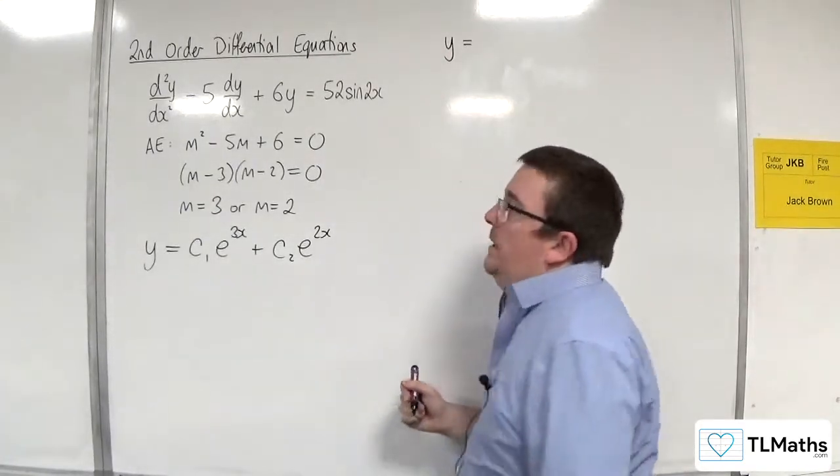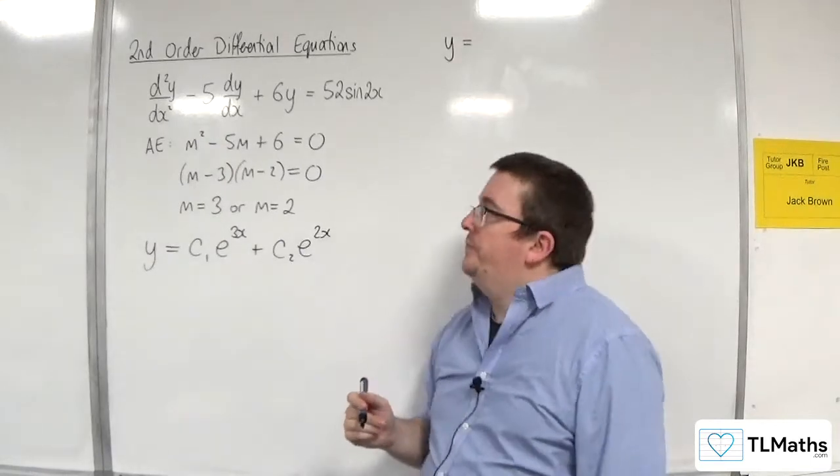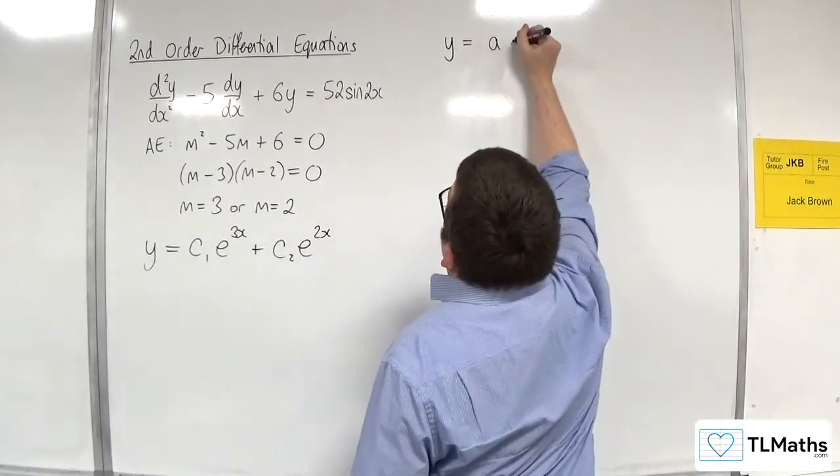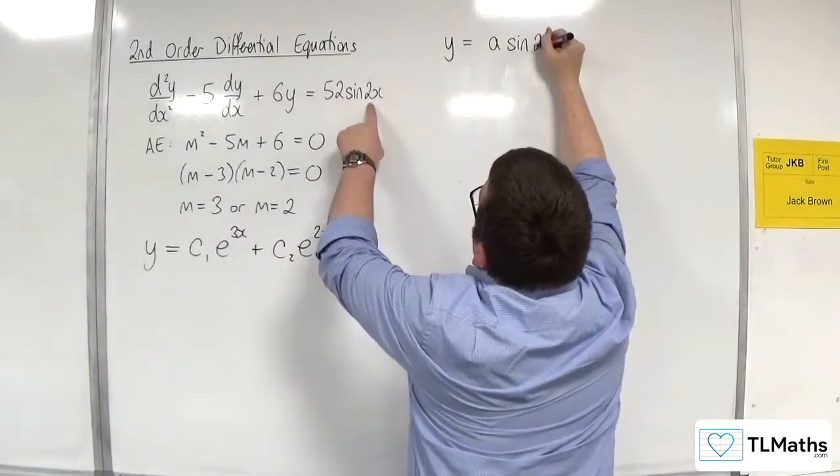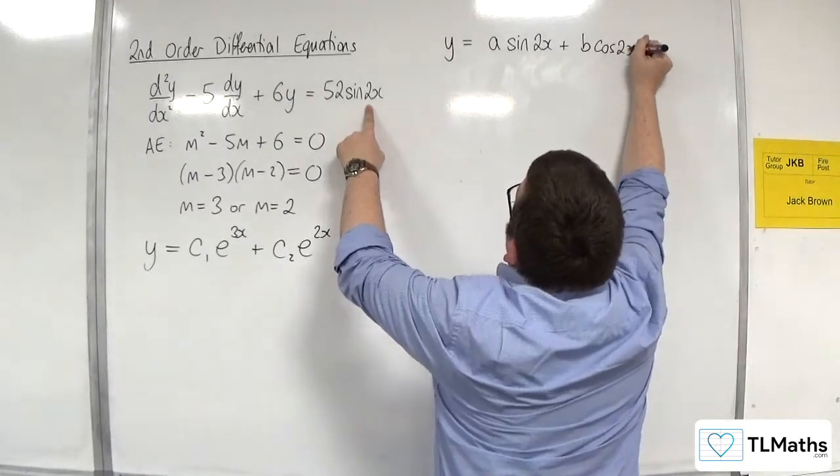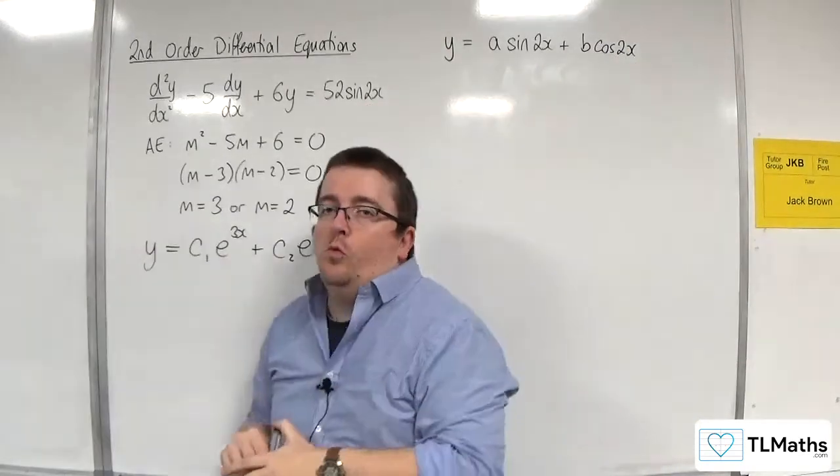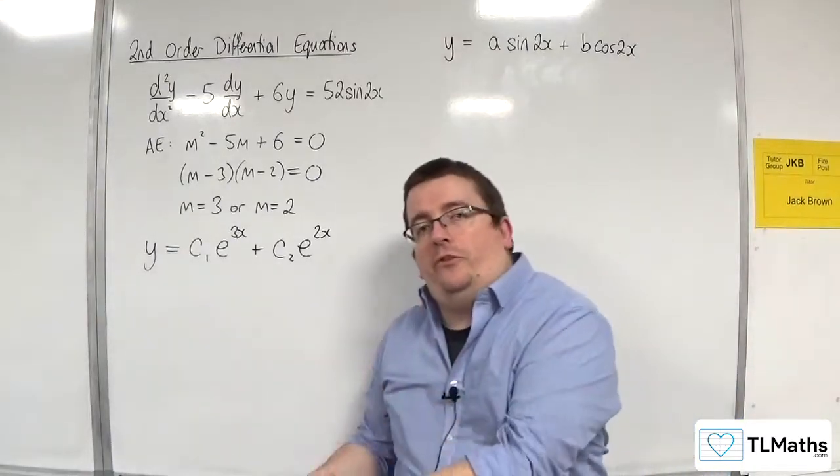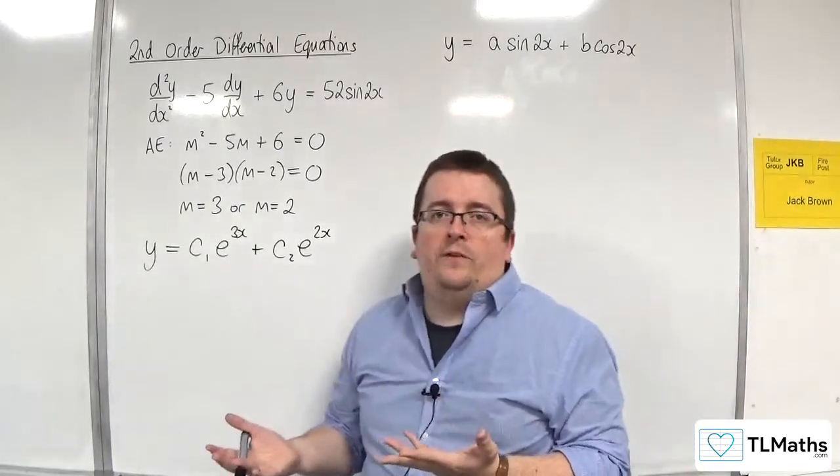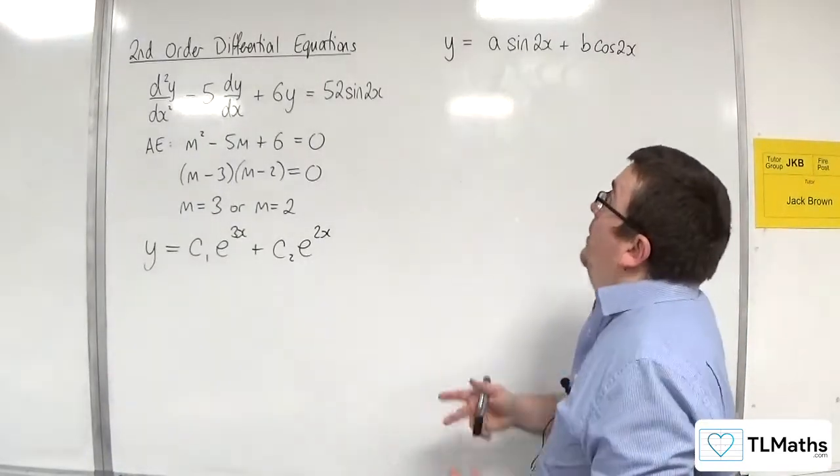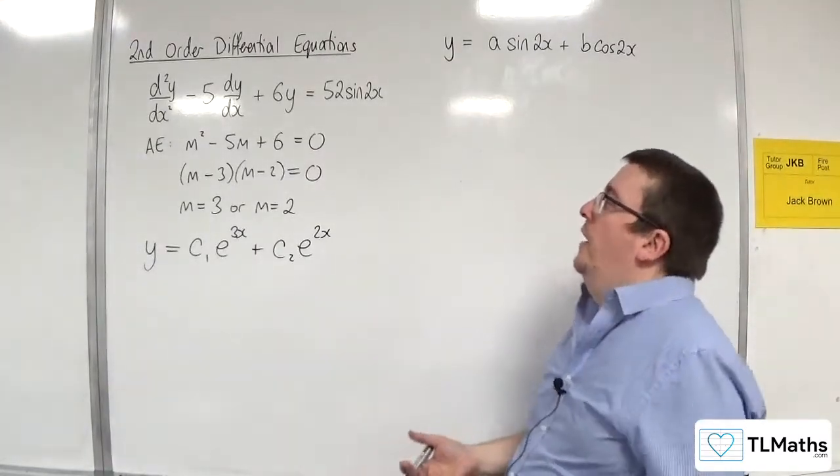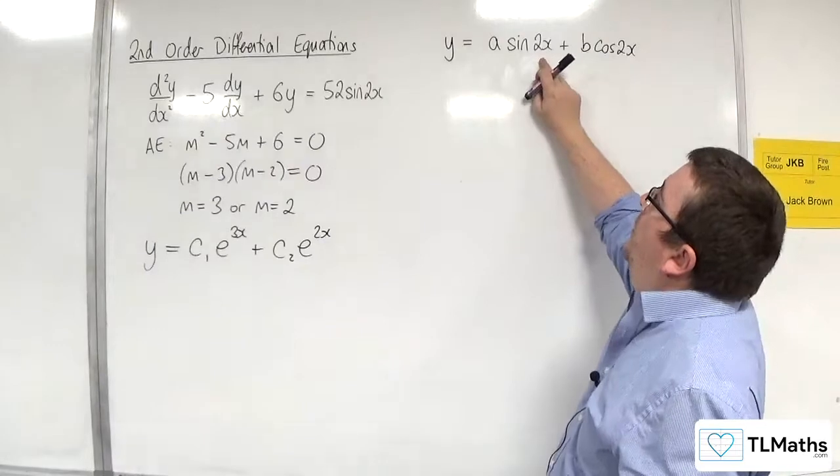Well, because you've got trig on the right-hand side, it needs to be of the form a sine of 2x plus b cosine of 2x. Now, you might be wondering as to why you need both sine and cosine there. The 2x part, you might feel, is pretty obvious, because when I differentiate this down, the 2x stays the same, as you know, by the chain rule. So it makes sense that the 2x has to be there.